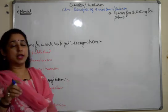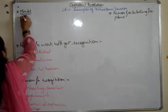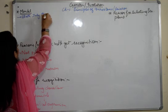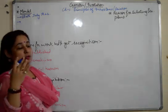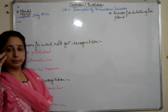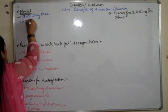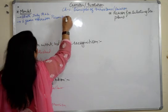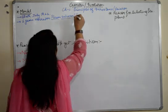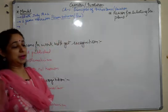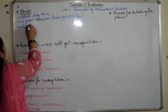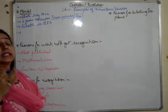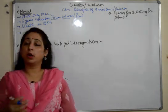Mendel was born in July 1822. He worked on Pisum sativum — the pea plant — for six years. His death was in 1884. We'll also talk about the reasons why he selected the pea plant.